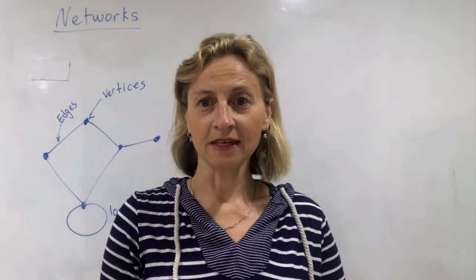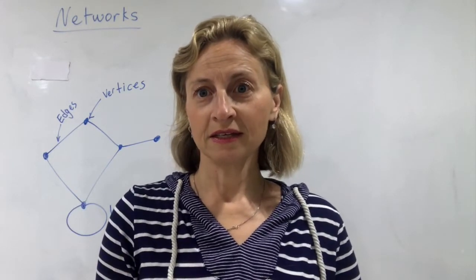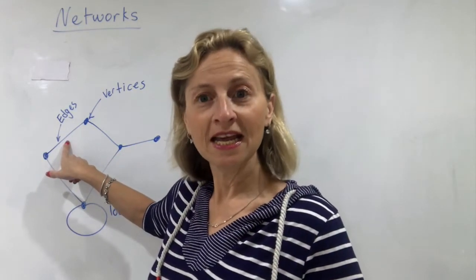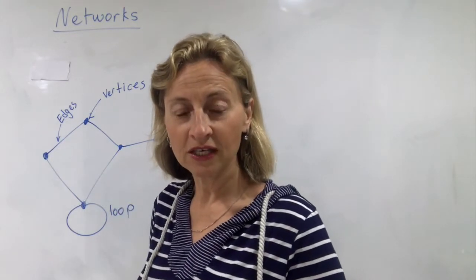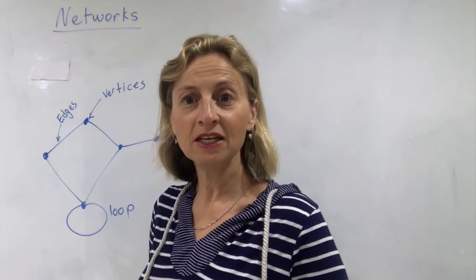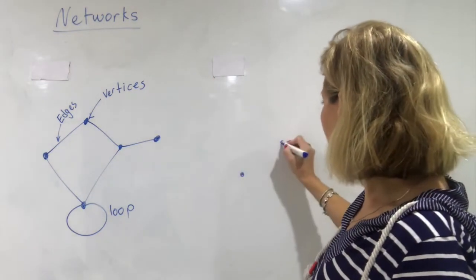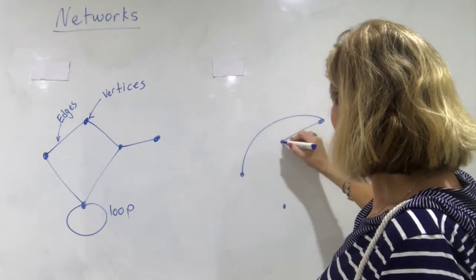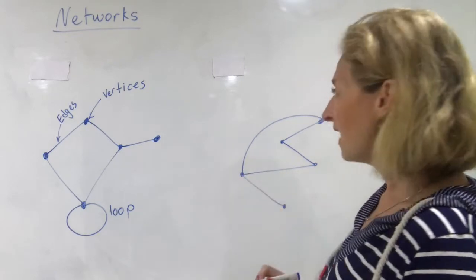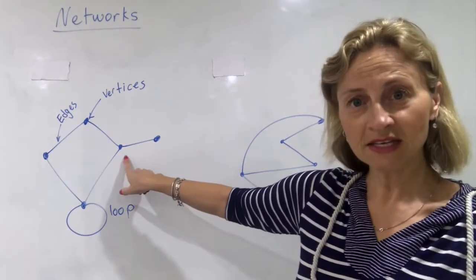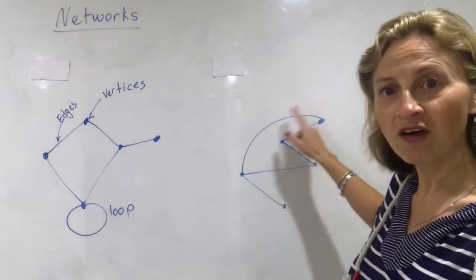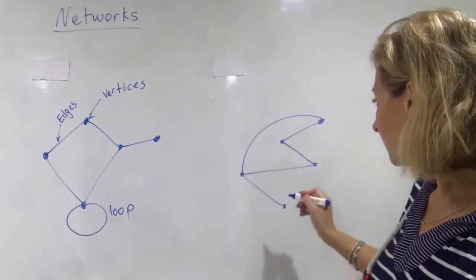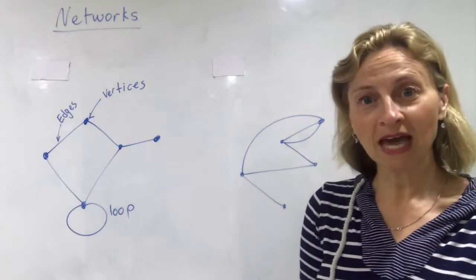It is quite important to understand that the network I've drawn on the board has five vertices and five edges. Any other network that has five edges and five vertices will be considered to be the same network. For example, this new network would be considered the same as the original because it also has five vertices and five edges. Also notice that the edges don't have to be straight, and it is possible to have two edges coming out of the same vertex.